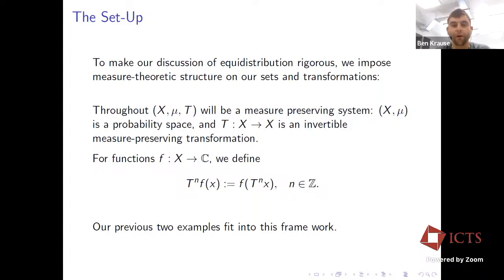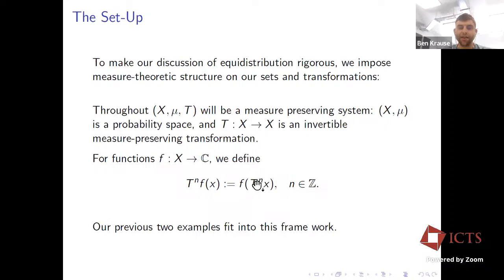I'm going to now switch gears and talk about the more general setting. For the rest of this talk, (X, μ, T) will be a probability space with an invertible measure-preserving transformation. I'll use the ergodic-theoretic notation: the function T^n f picks a physical location, applies the transformation T n times, and then evaluates. In the first example T was an irrational rotation, X was the torus; in the second example T was the doubling map. We can view our Cesàro averages in this capacity.